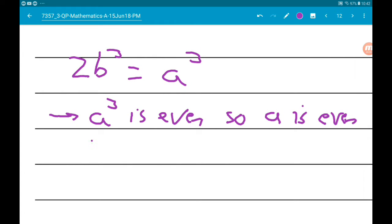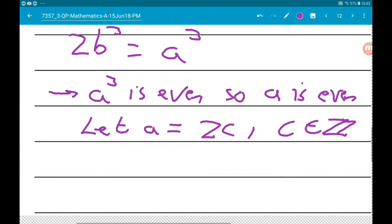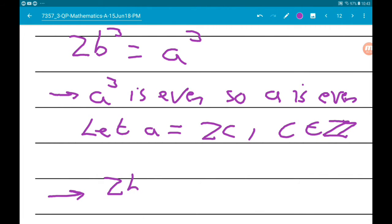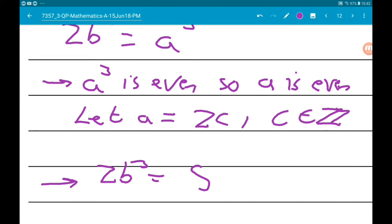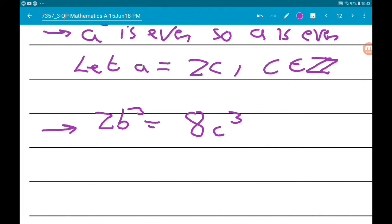Now we could let a equal 2 times a constant c, where c is an element of the integers. Then 2b cubed equals 2c cubed, so that's 8c cubed. If we divide by 2, b cubed is then 4c cubed.